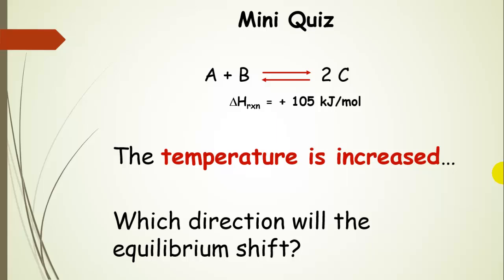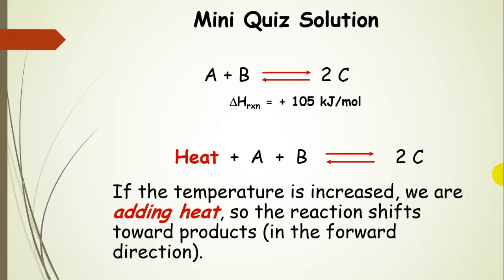Here's another mini quiz. The temperature is increased on this reaction — which direction will the equilibrium shift? Since we have a positive delta H, heat is a reactant. Writing heat in as a reactant and increasing the temperature means we're adding heat, so we're adding reactant. Therefore, the reaction shifts in the forward direction toward products.